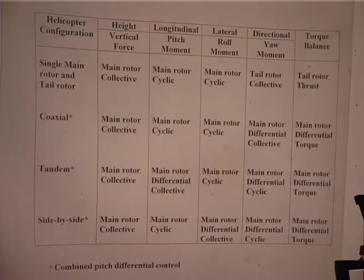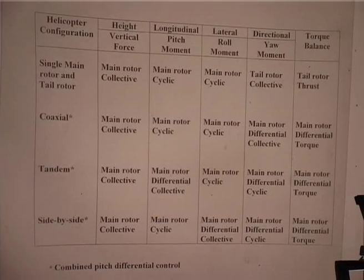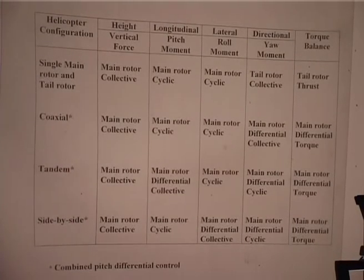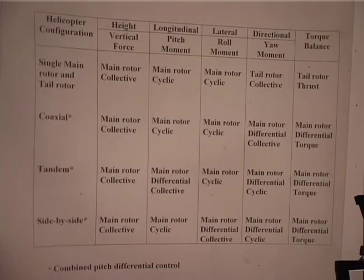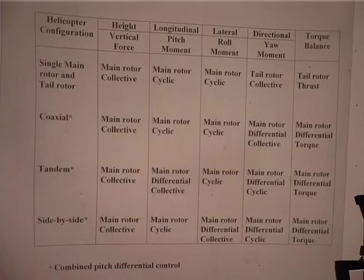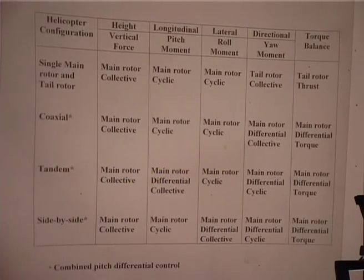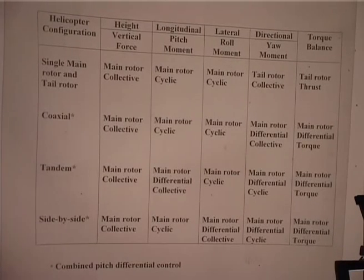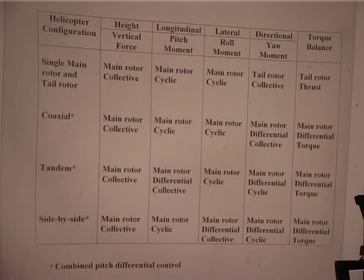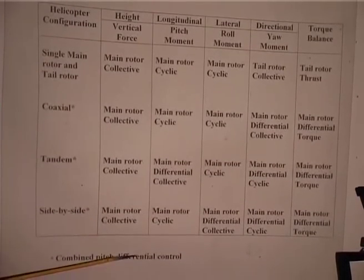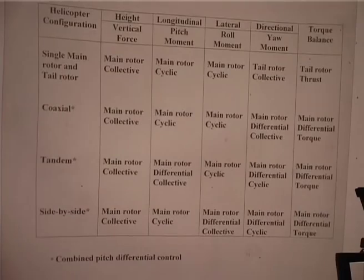The control using two rotors differs slightly for different configurations, but as far as the pilot is concerned, he has one cyclic stick, one collective stick, and pedals. Depending on the configuration, when he moves the pedal, it does the appropriate change — either tail rotor or differential collective. That is why helicopter configuration is important. This is called a combined pitch differential control mechanism, going to the main rotor.